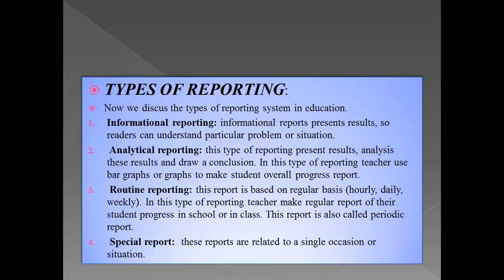Then we discuss types of reporting. Now we discuss the different types of reporting system in education. The first type is informational reporting. Informational reports present results, and the reader can easily understand a particular problem in the context of the situation — what problem is arising in learning and in what situation. The reader can easily understand it. Second, we have analytical reporting — analytical reports also present results, but first the student's result is analyzed and then a conclusion is drawn. In analytical reporting, the teacher can also report the student's work and progress through graphs, informing parents via graphs about how much a student has achieved in a subject and where improvement is needed.